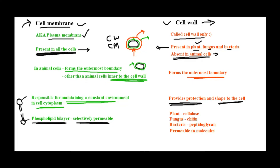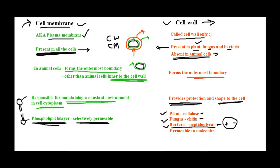We saw that the cell membrane is a phospholipid bilayer. For the cell wall, the composition differs depending on the type of cell. For plant cells, the cell wall is made up of cellulose. For fungus, it is chitin, and for bacteria it is peptidoglycan. In a previous video, we also talked about the cell wall composition of gram-positive and gram-negative bacteria; you can click the link on screen for more detail about those cell wall structures.